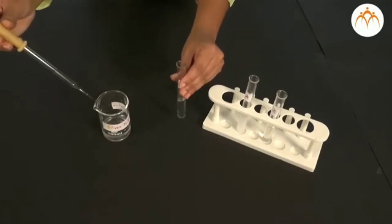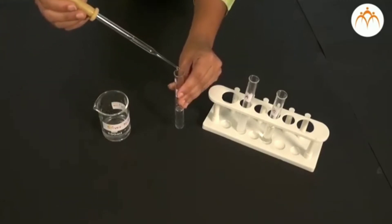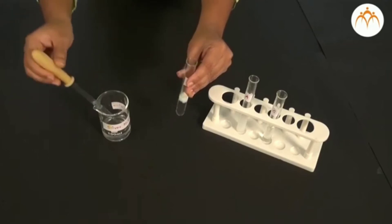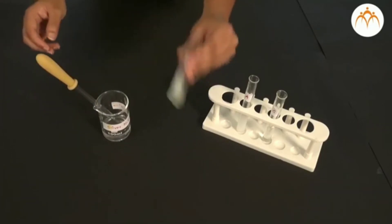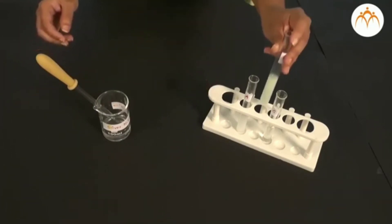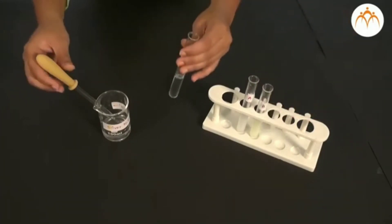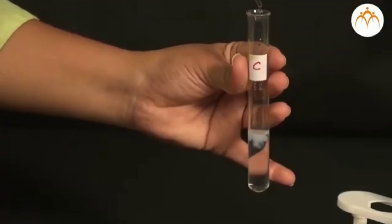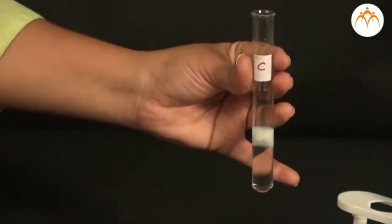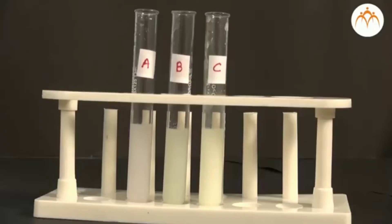In all three test tubes, you will find precipitates. It means that when silver nitrate reacts with these three compounds or solutions, precipitate is formed. This indicates that there is a possibility that there may be halides or compounds of halogen in these three solutions. These halides are giving us precipitates.